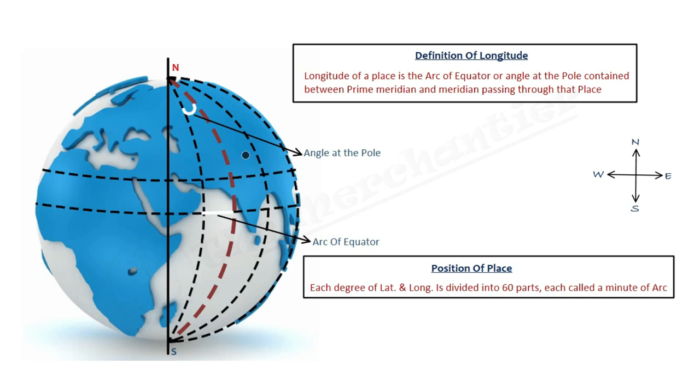Each degree of latitude and longitude is divided into 60 parts, each called a minute of arc. When we have longitude or latitude to write in degrees, minutes, and seconds, we will learn in the questions.